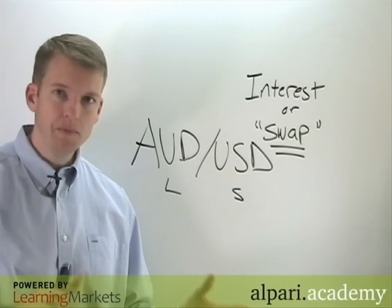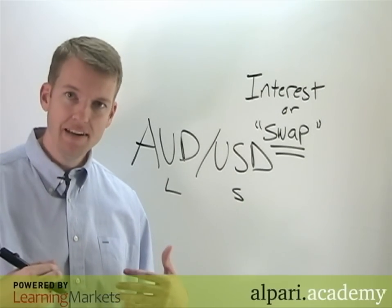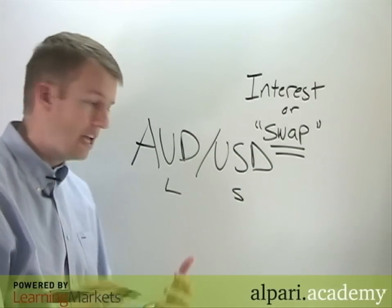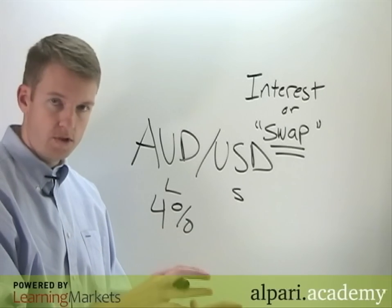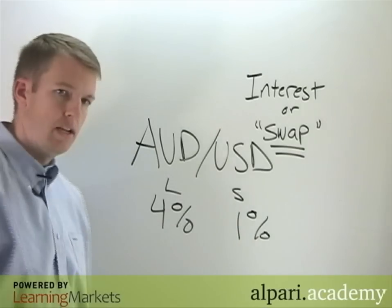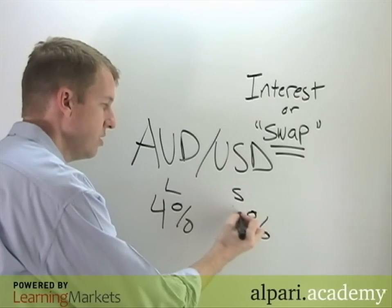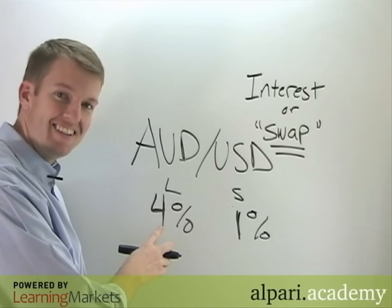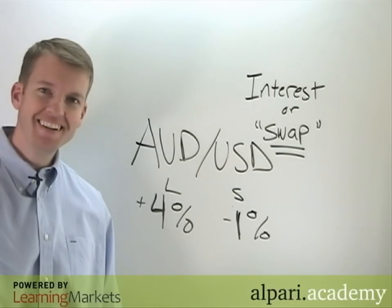If we borrow money, we're going to have to pay something on that. And if we own money, we're probably going to get paid interest on that if it were a deposit. What happens is that interest rates are not equivalent from one economy to the next. For example, the Aussie is at around 4% — that's their benchmark interest rate set by their central bank. The U.S. dollar is at 1% interest. So if you look at this as representative of the interest charged for borrowing dollars and paid for owning Aussie dollars, you've got a differential. You're being charged one rate but earning the other.